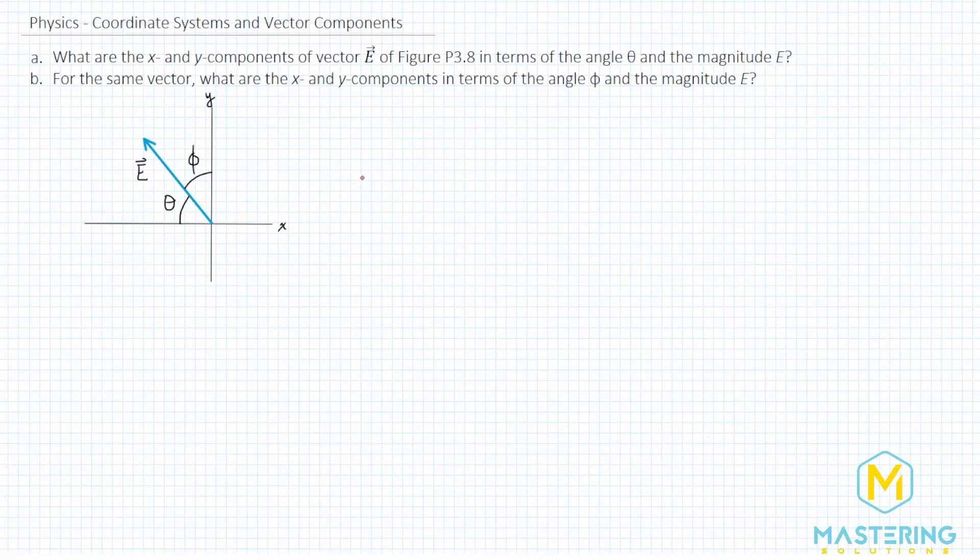Welcome to Mastering Solutions. In this coordinate system and vector problem, they give us an a and a b, and we have to figure out the x and the y components for both of these.